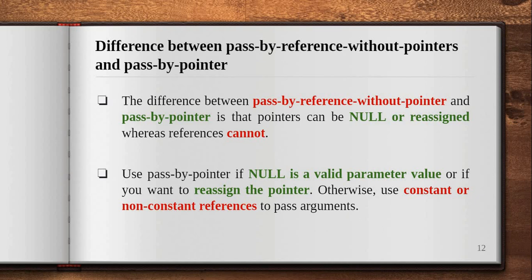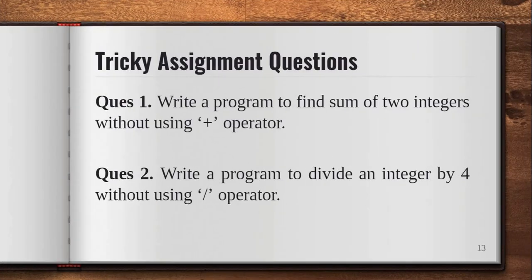That's all for today's topic — functions and swapping of two numbers using a third variable. In the next video we will discuss swapping without using a third variable. Now let's see some tricky assignment questions for your practice. First: write a program to find the sum of two integers without using the plus operator. Second: write a program to divide an integer by four without using the divide operator.